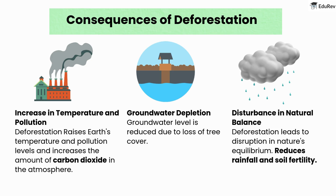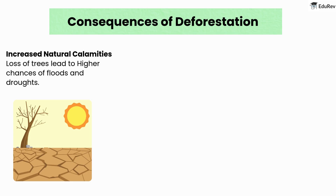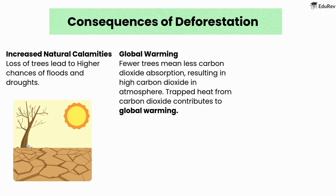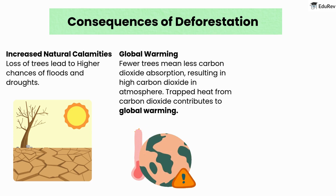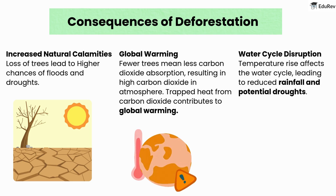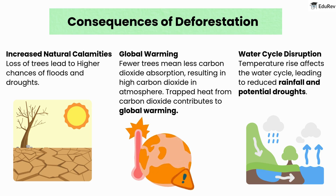Deforestation also reduces rainfall and soil fertility, and increases the likelihood of natural calamities. Loss of trees leads to higher chances of floods and droughts. Regarding global warming, fewer trees mean less carbon dioxide absorption, resulting in higher CO2 in the atmosphere. Trapped heat from carbon dioxide contributes to global warming. Temperature rise also affects the water cycle, leading to reduced rainfall and potential droughts.